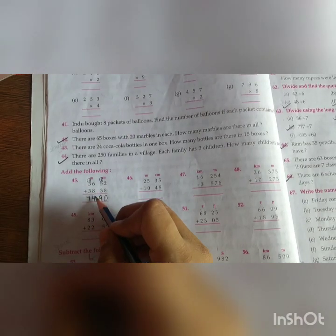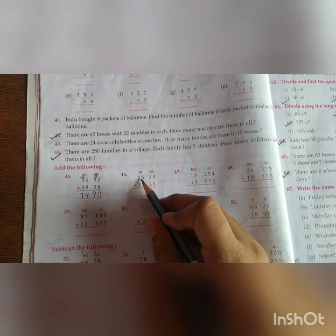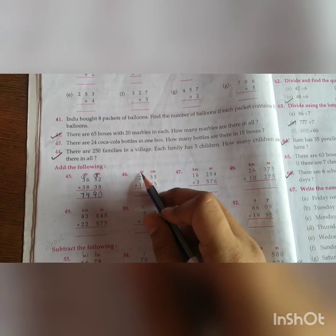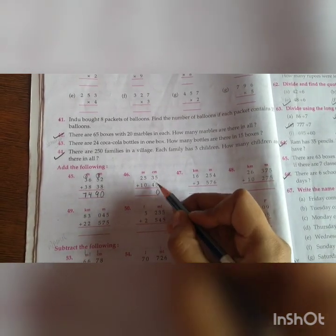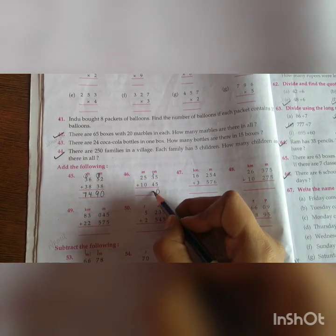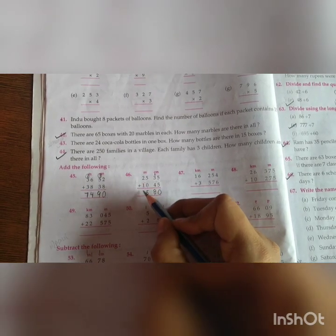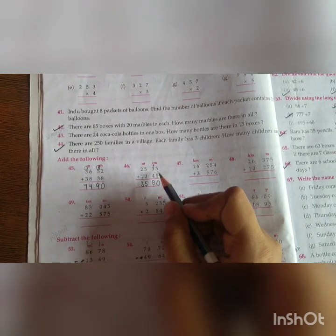Meters ko add karke meters and centimeters ko add karke centimeters. Add this. Twenty-five meter, thirty-five centimeter plus ten meters, forty-five centimeter. Five plus five, ten. One carry. Three plus one, four. Four plus four, eight. Five plus zero, five. Two plus one, three. So your answer is thirty-five meters, eighty centimeters.